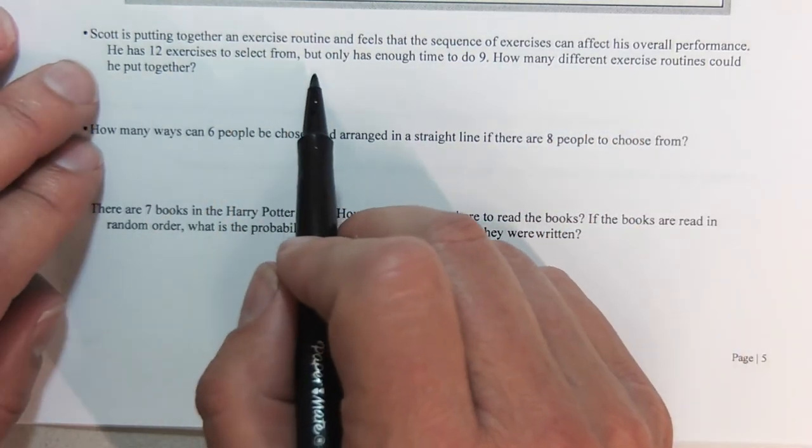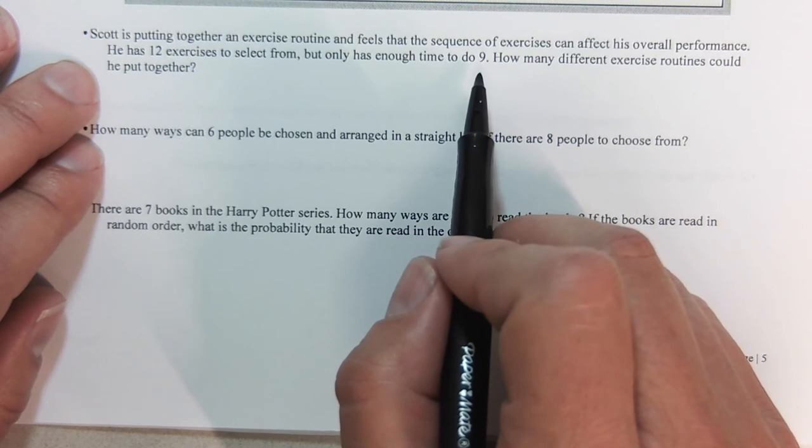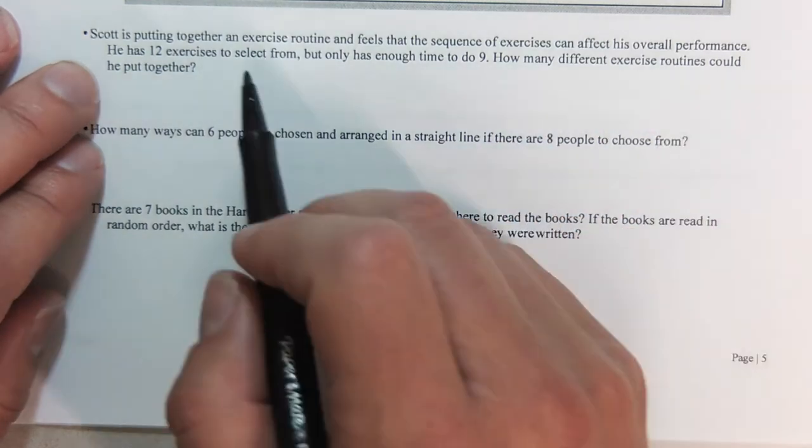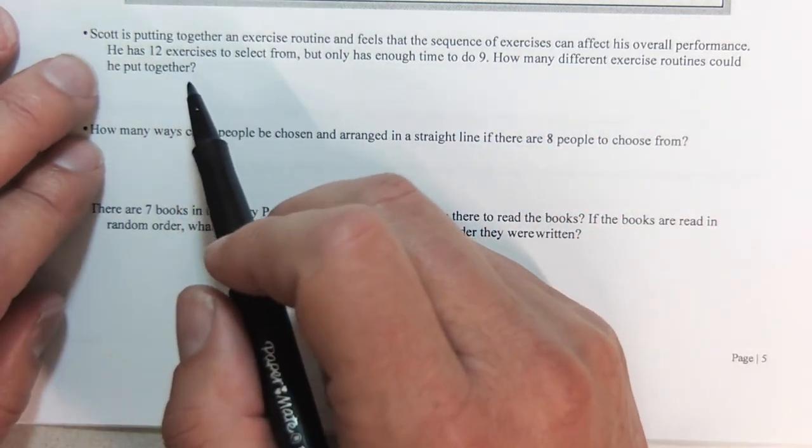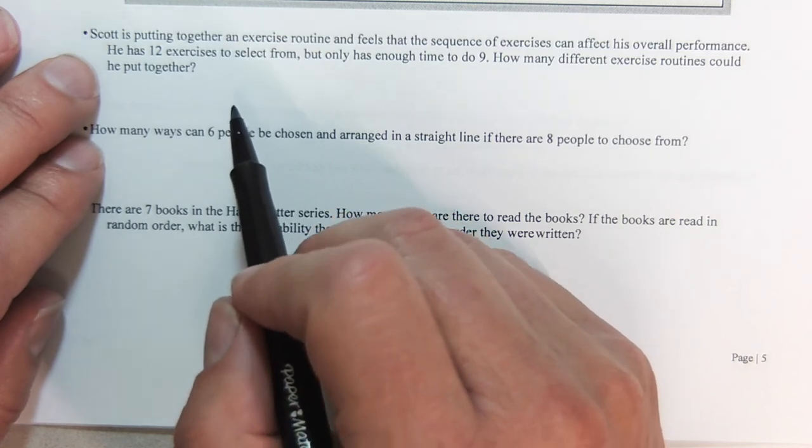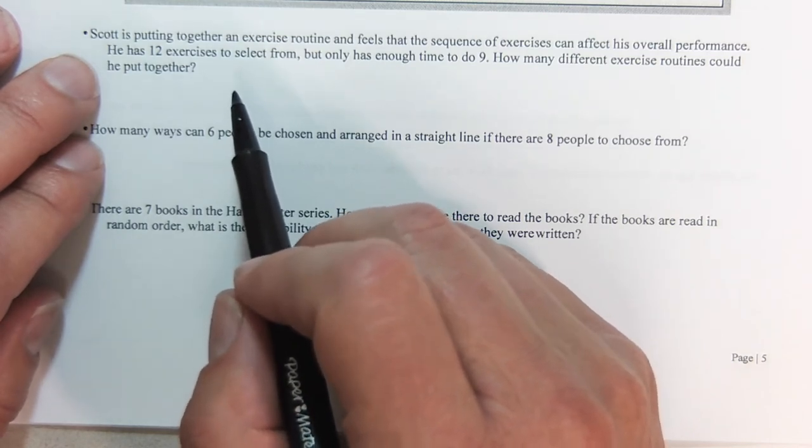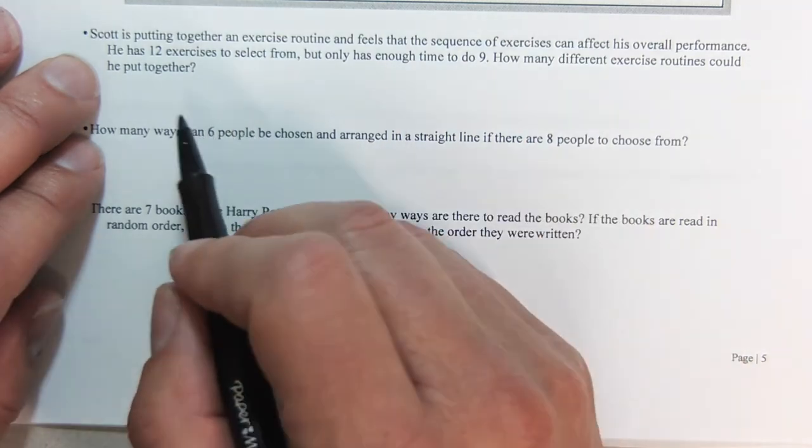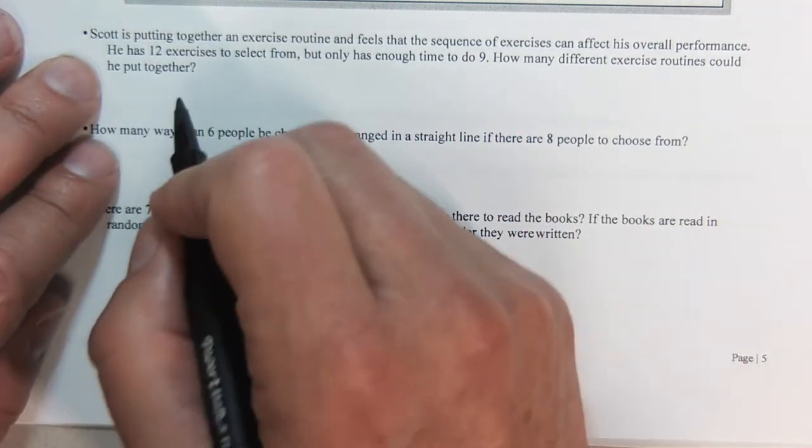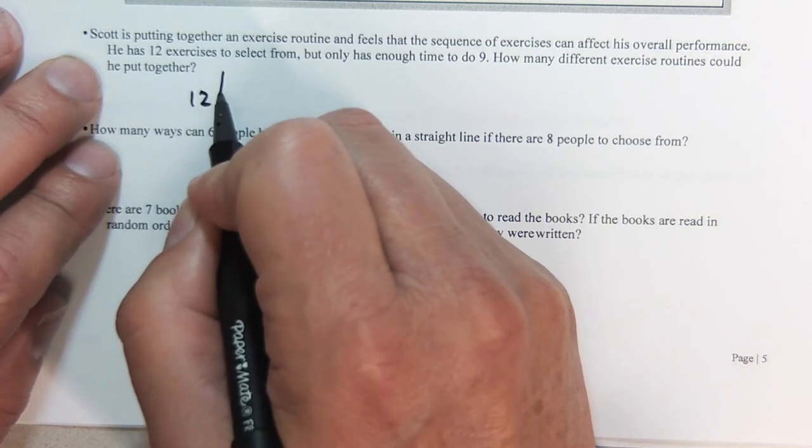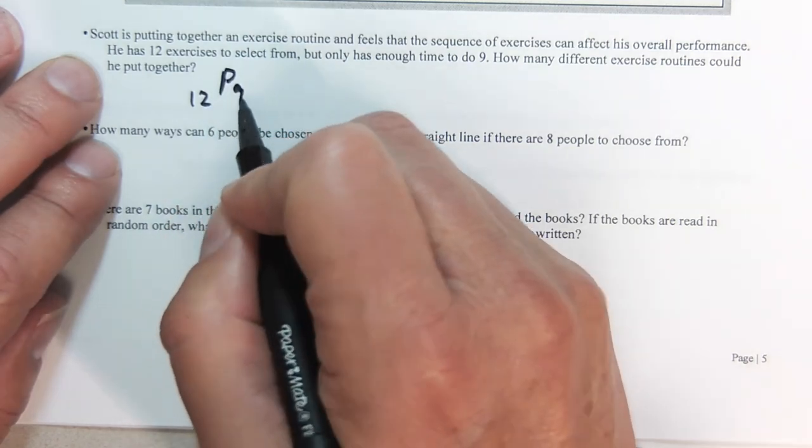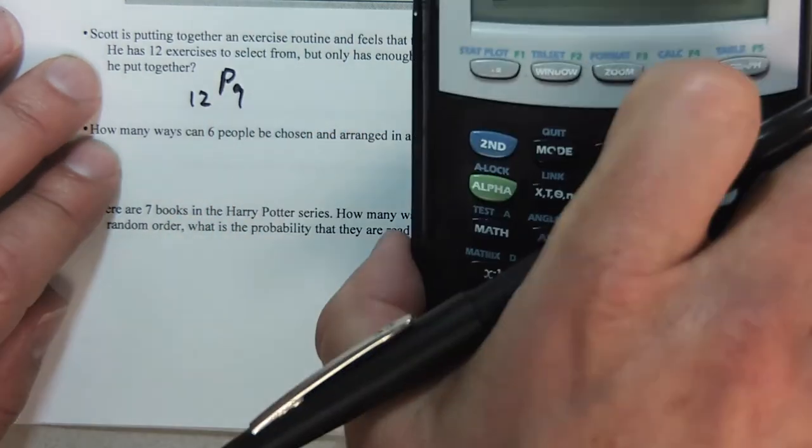Scott is putting together an exercise routine and feels that the sequence of exercises can affect his overall performance. He has 12 exercises to select from, but only has enough time to do 9. How many different exercise routines? This means Scott believes that if he goes running first and push-ups second and sit-ups third, that's different than doing sit-ups first, then the run, then the push-ups. So he's saying that the order in this case really does matter.